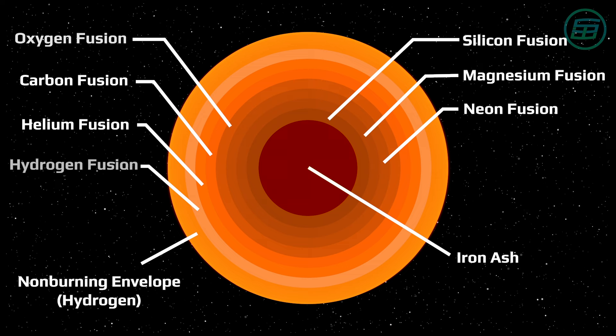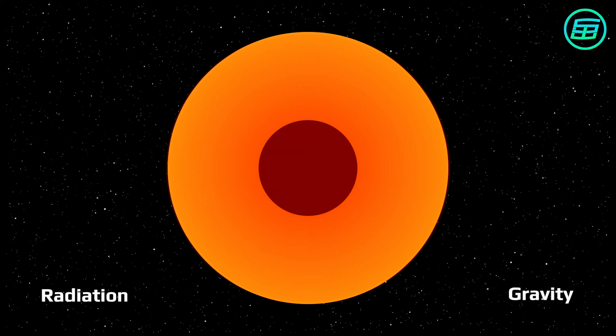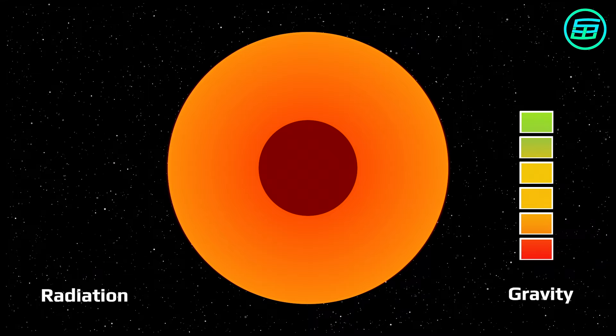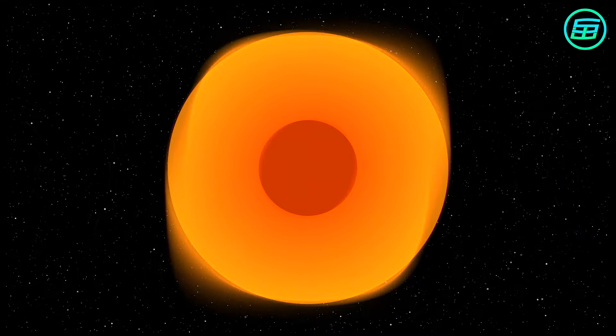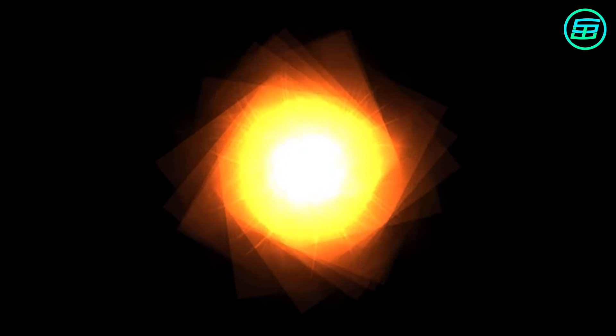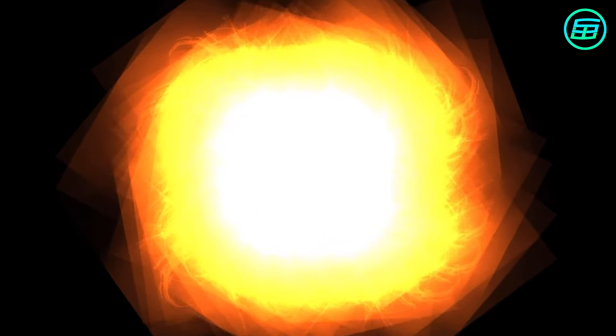To fuse iron takes more energy than is released from the reaction. So with the outward flow of radiation stopped, gravity is suddenly unopposed. All of the outer layers of the star collapse at speeds of up to a quarter of the speed of light. They then rebound off the compressed core and fly off into space as a supernova explosion.